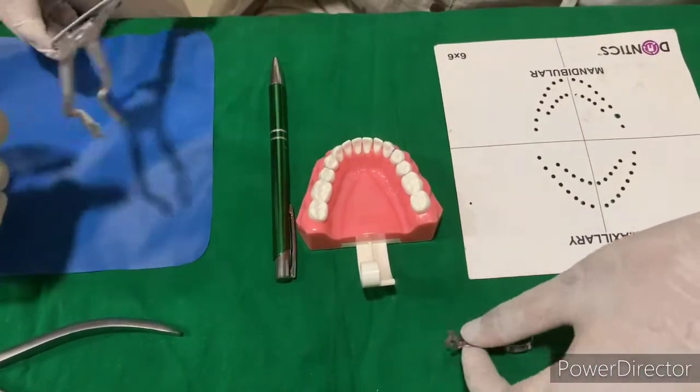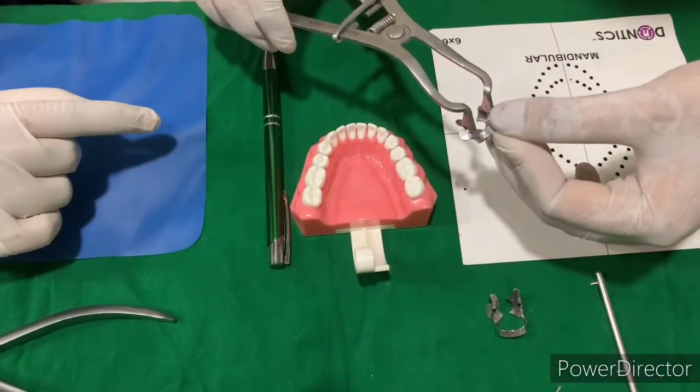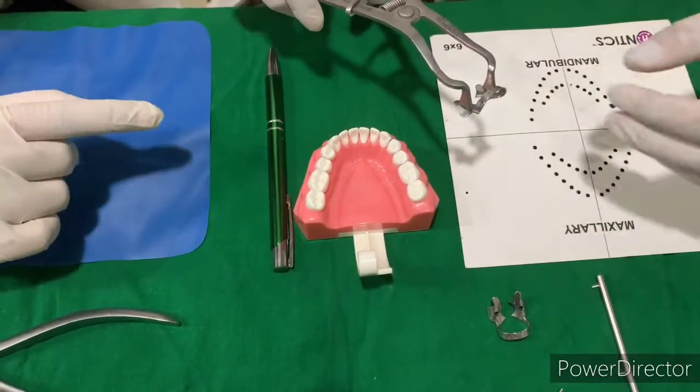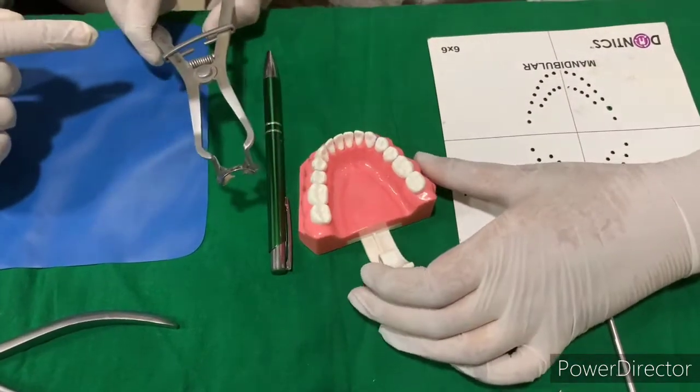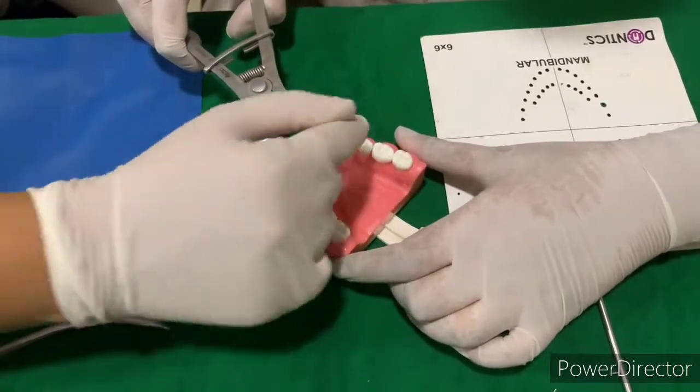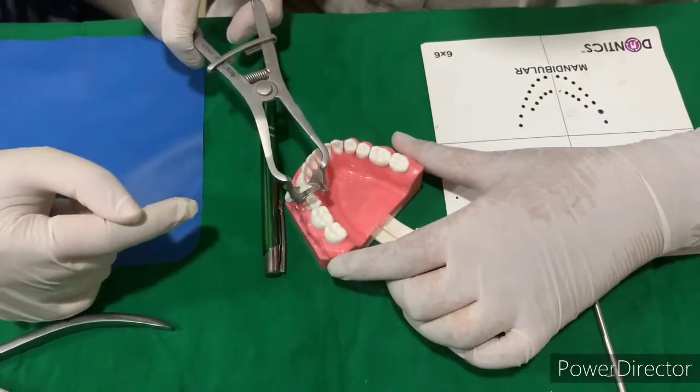This video is about the sectional isolation of anteriors. I'll expose from canine to canine. This is about clamp selection.